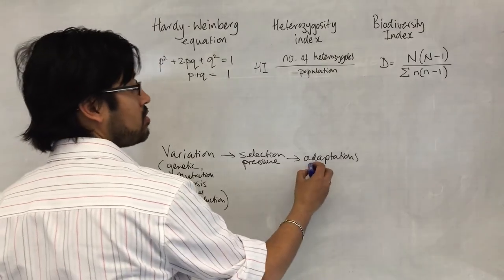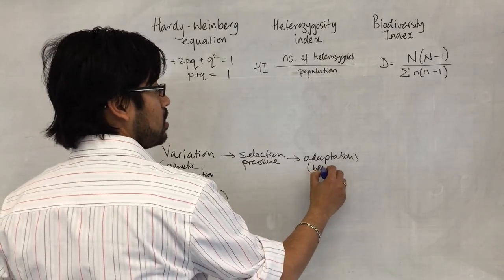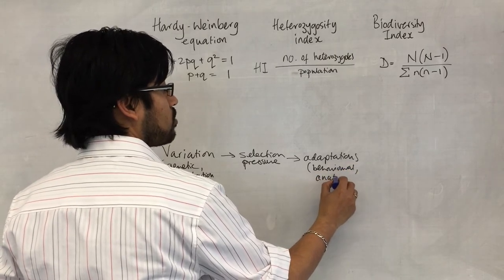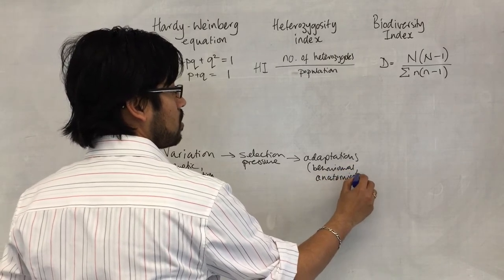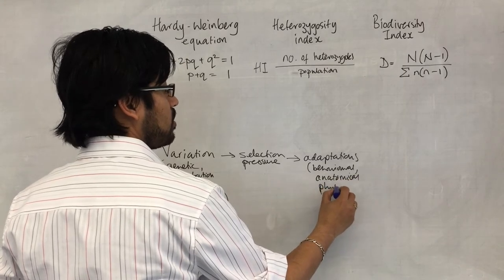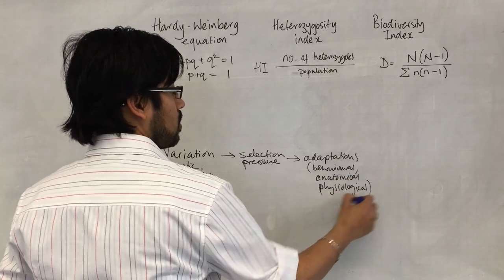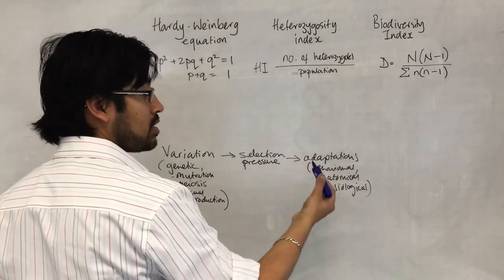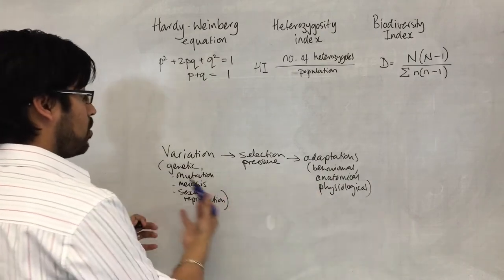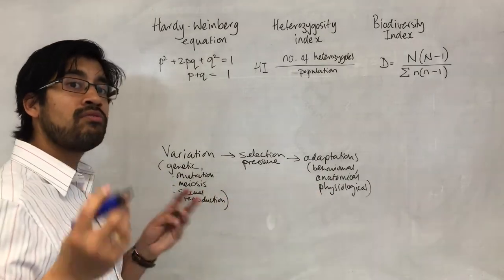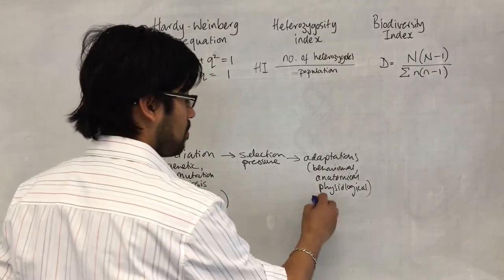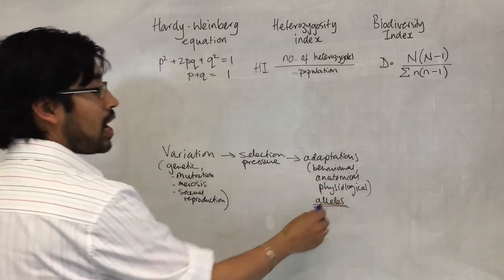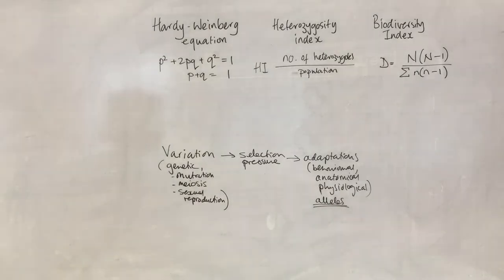Adaptations, there's different types. They might be behavioural, they may be anatomical, they may be physiological. But whatever it is, those adaptations are simply the outcome of particular advantageous alleles. We've got to keep our eye on that, because that's going to become useful a bit later.